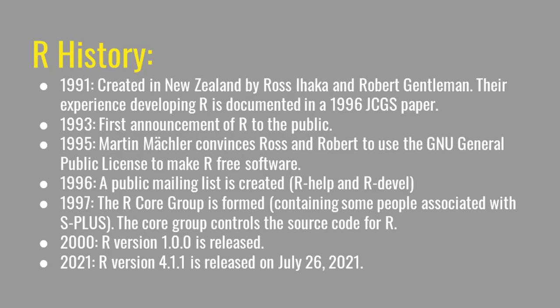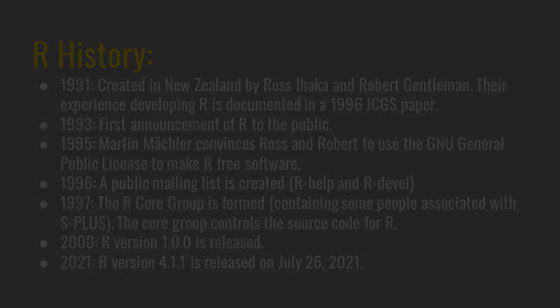In 1996 a mailing list was developed — there are two main mailing lists: R-help, which is a general mailing list for questions, and R-devel, which is more specific for people doing development work in R. In 1997, the R core group was formed, containing many of the same people who developed S-plus. The core group controls the source code for R; only members of the R core group can modify the primary source code, although many non-members have suggested changes that have been accepted.